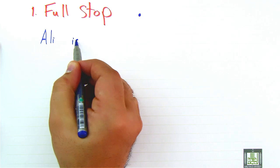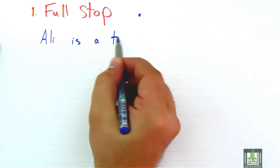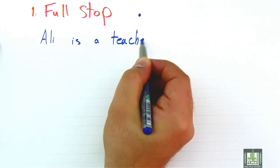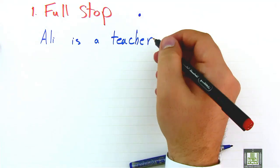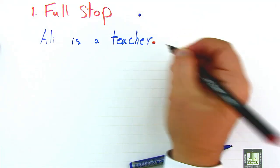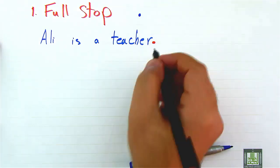For example, Ali is a teacher. Now this sentence has finished, so we have to indicate the end of this sentence by adding a full stop.